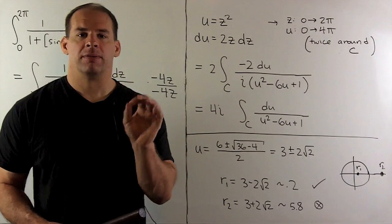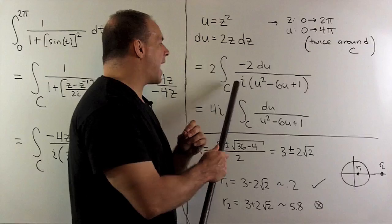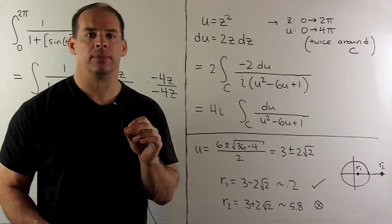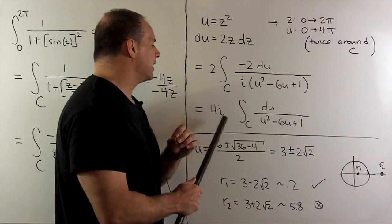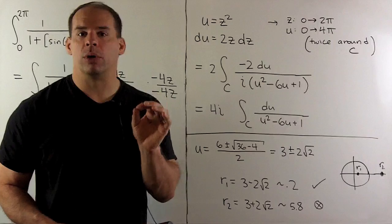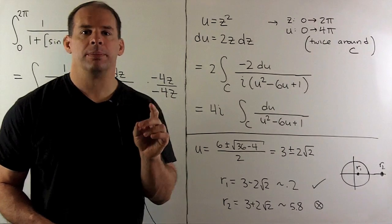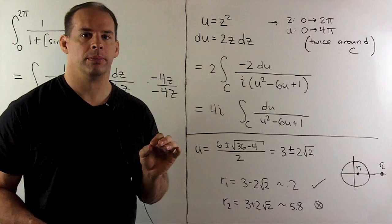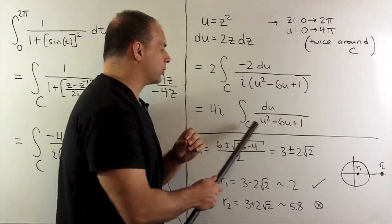We substitute. If I want to simplify, I can move the i from the denominator to the numerator as a minus i. So, I'll have 4i times this line integral here. Now, I want to apply the residue theorem. To do that, we have to find which poles are inside the unit circle.